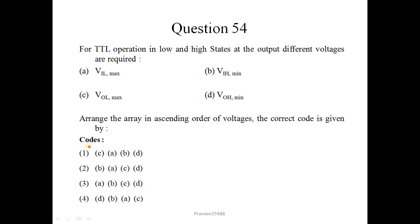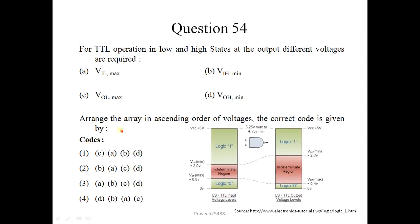Next question number 54. For TTL operation in low and high states at the output different voltages are required. Here I will show the diagram which will clearly explain. Here you will observe that minimum voltage is at the output for logic 0 when it is at its maximum. At the output for low max, this will be the minimum first. And then input side the maximum value for logic 0, input side low max. This is next. And the next again for input for logic 1 for high, this will be the minimum. This would be 3. And the last is this, for logic 1 minimum value and at the output side. So their ascending order of voltages will be CABD. Correct option is 1.